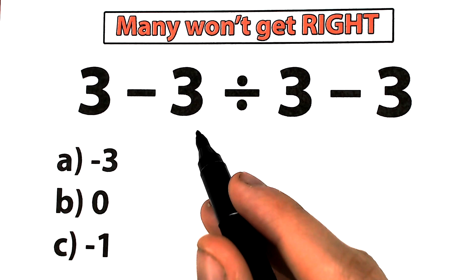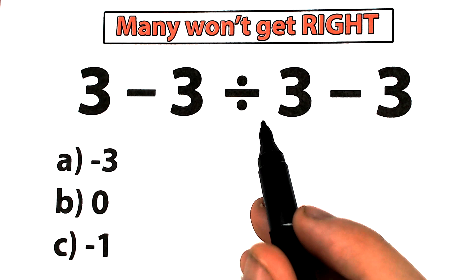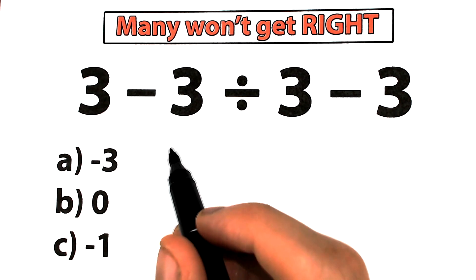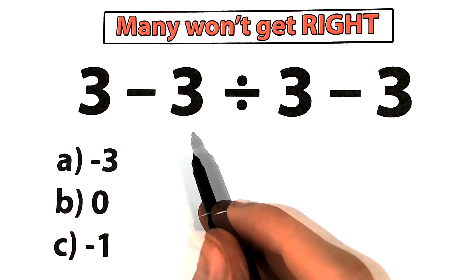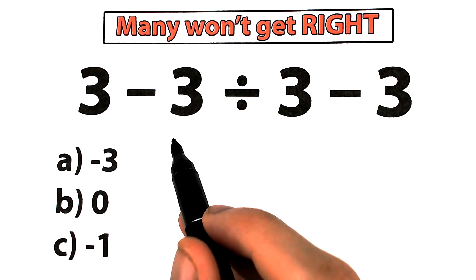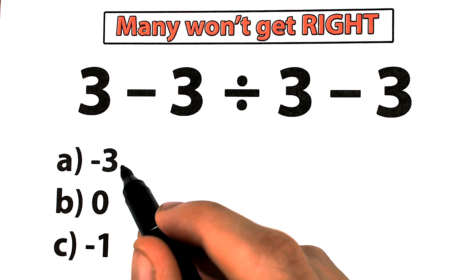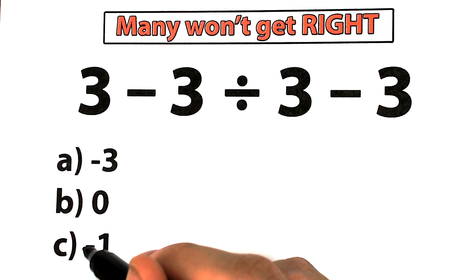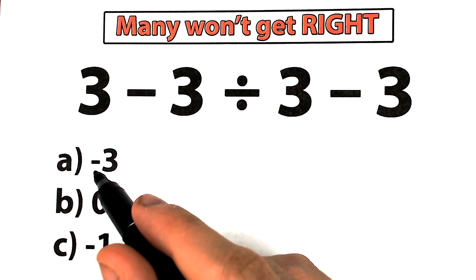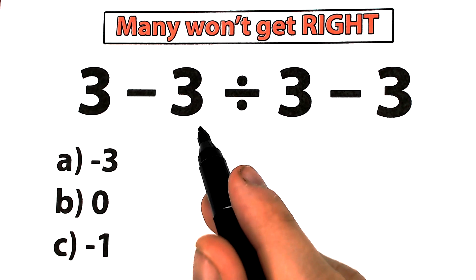Let me go ahead and tell you the problem we have. We have 3 minus 3 divided by 3 minus 3. On the first side this is a very easy problem — we have subtraction, we have division, so everyone learns this stuff in the third grade. Right now go ahead and put your answer into the comment section. We have 3 options: A, B, and C, so choose one option — what do you think is correct? Write your option down into the comment section; we will check our answers at the end of the video.